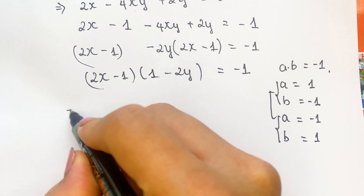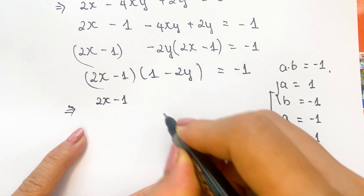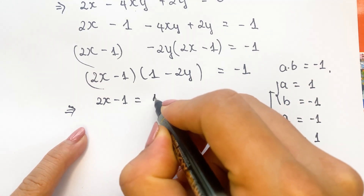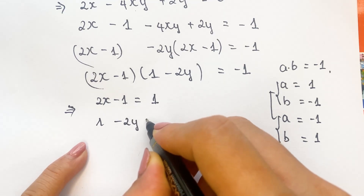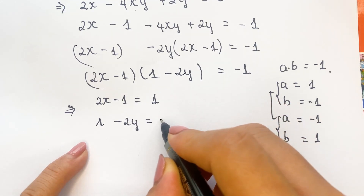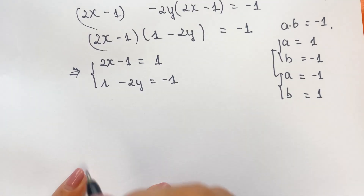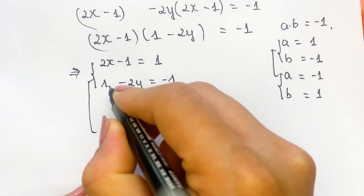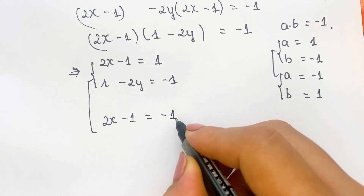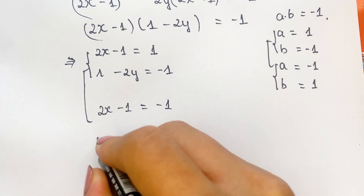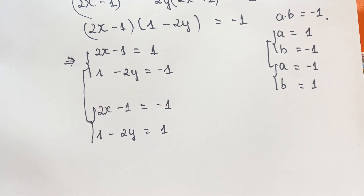Therefore, we can apply here. We can have 2x minus 1 equals 1 and 1 minus 2y equals minus 1 for case number 1. And for case number 2, we can have 2x minus 1 equals minus 1 and 1 minus 2y equals 1.